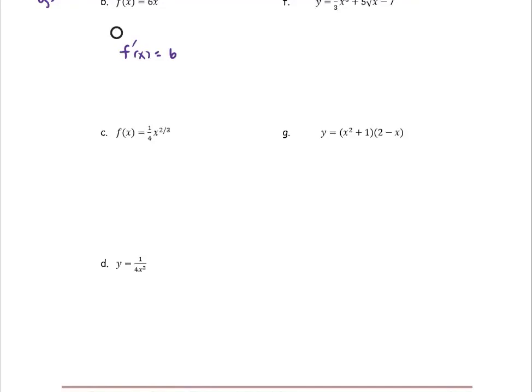Part c, f(x) is 1/4 multiplied by x to the power 2/3. This is the combination of the constant multiple and the power. I'm going to write this as 1/4 as a coefficient, and then multiply by x to the power 2/3.